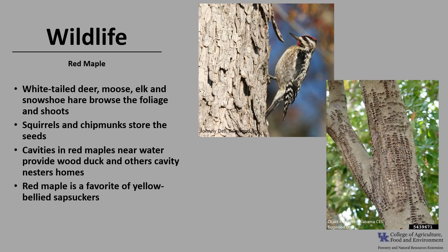Yellow-bellied sapsuckers, which are a type of woodpecker, are known to peck holes into trees and larger woody shrubs, feeding on the bark, the sap, and the insects that are drawn to the sap. Red maple is a favorite of sapsuckers, which are attracted to previously visited trees and may return to the same tree year after year. Holes made by the sapsucker can provide points of entry for wood decaying fungi and bacteria, and the physical damage may weaken trees, making them more susceptible to secondary diseases and insects.